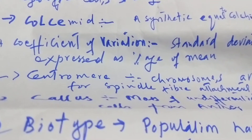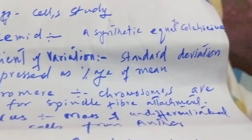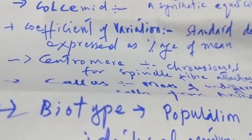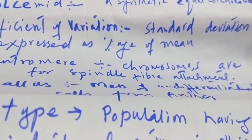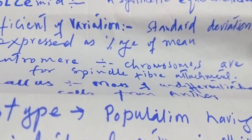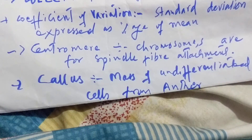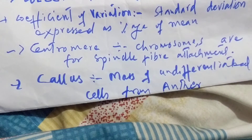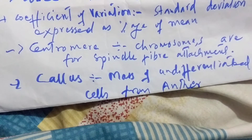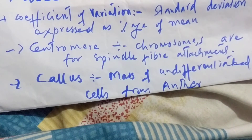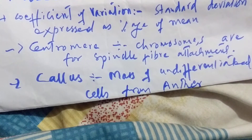Cytoplasm is the protoplasm excluding the nucleus. Cytology is the cell study. Colsemid is a synthetic compound equal to colchicine. Coefficient of variation is the standard deviation expressed as a percentage of mean.